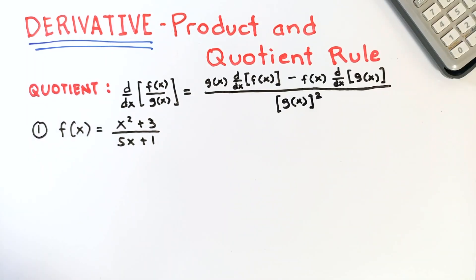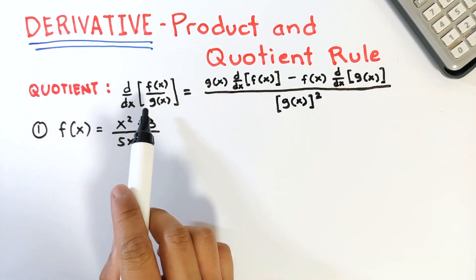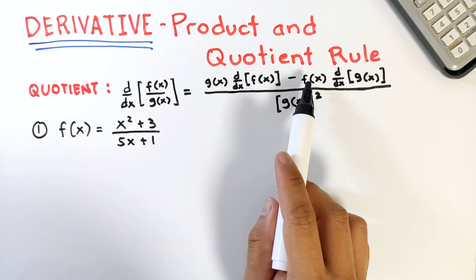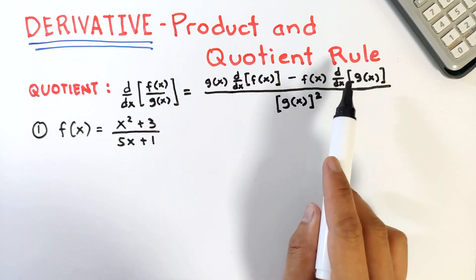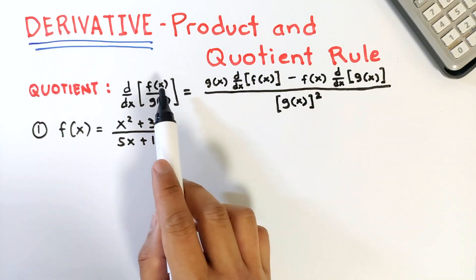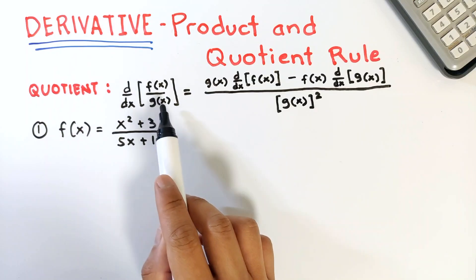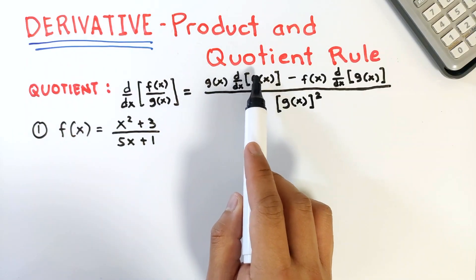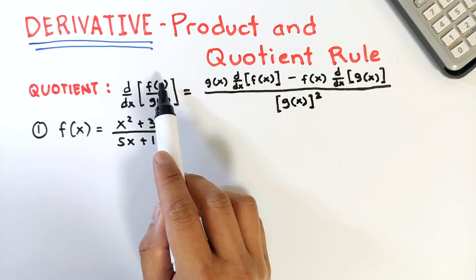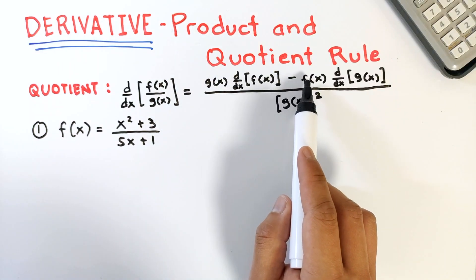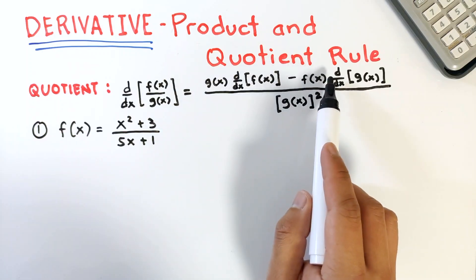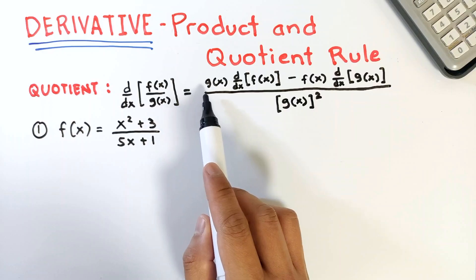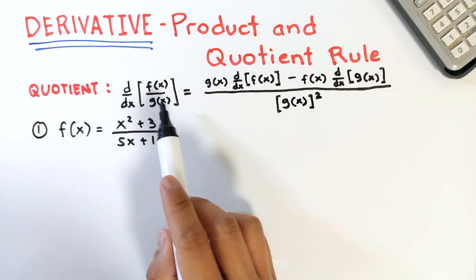For the quotient rule, the derivative of f over g is equal to g times the derivative of f, minus f times the derivative of g, over g squared. That means for the derivative of the quotient f over g, first we copy the denominator and get the derivative of the numerator. Then minus, copy the numerator, and multiply it to the derivative of the denominator. Then divided by the square of the denominator.